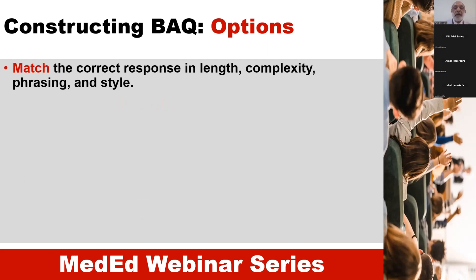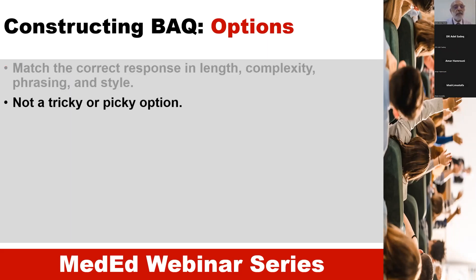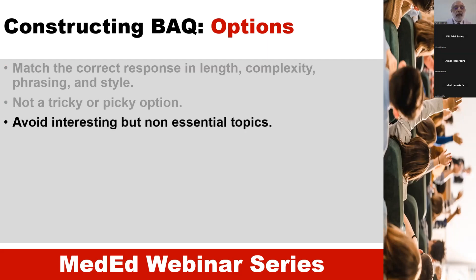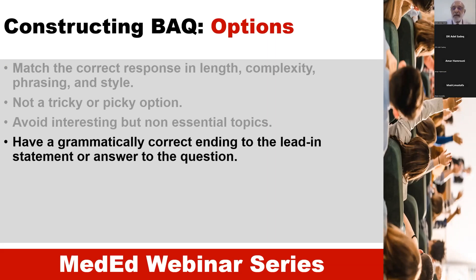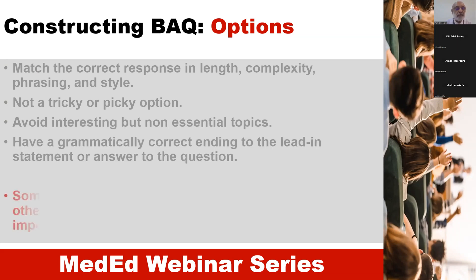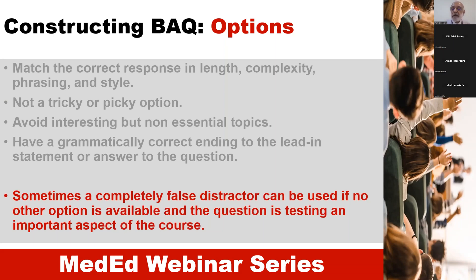The options should match the correct response in length, complexity, phrasing, and style — this is to deal with exam-savvy students, so the key and the distractors should match as much as possible. We shouldn't choose tricky or picky things, and we should avoid non-essential topics. We should have a grammatically correct ending to the lead-in statement. However, sometimes a completely false distractor can be used if no other option is available and the question is testing an important aspect of the course — only then can we use a completely false distractor in the BAQ.